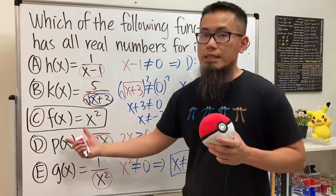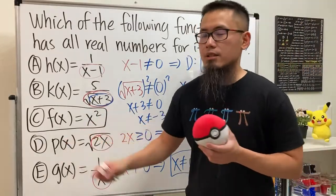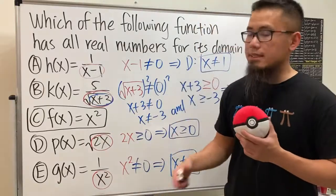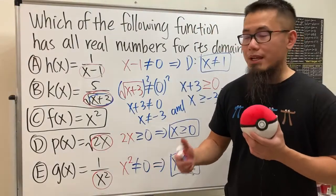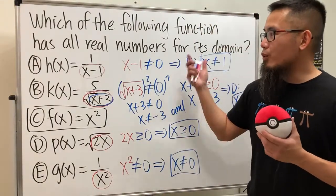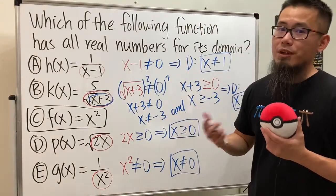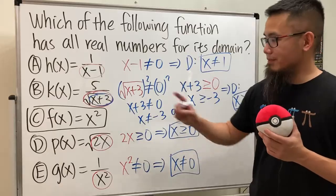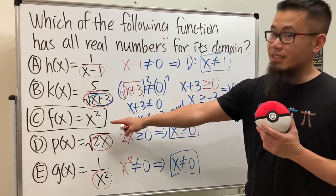As you can see, choices A, B, D, and E all have restrictions on their domains, but choice C does not. So choice C is the one that has all real numbers for its domain. That's it.